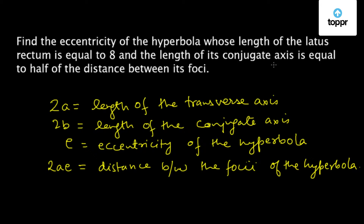According to the question, the length of the latus rectum is equal to 8. We know that the length of the latus rectum is equal to 2b² divided by a, so 2b²/a = 8. Let us call this equation number 1.